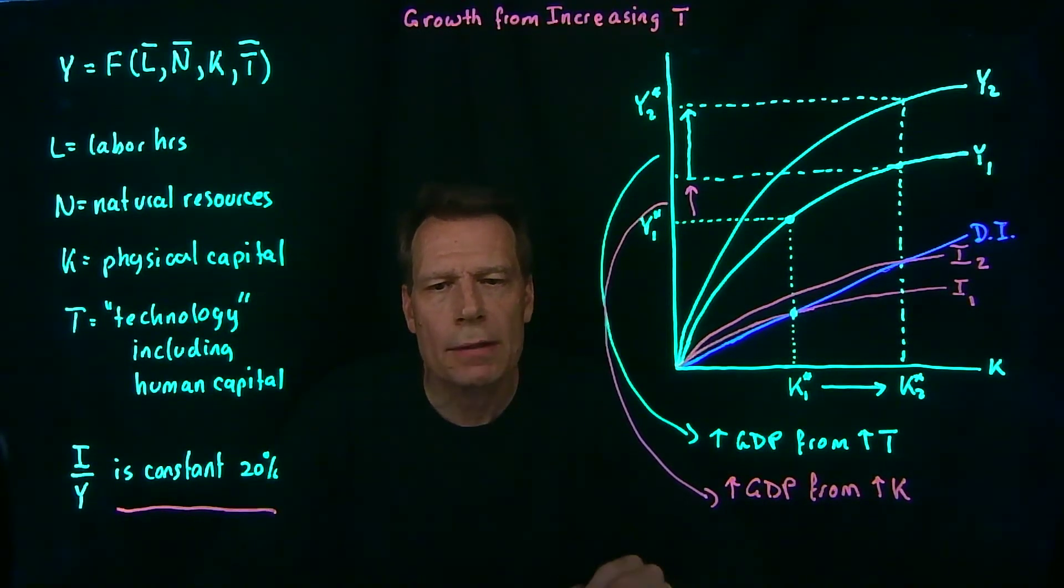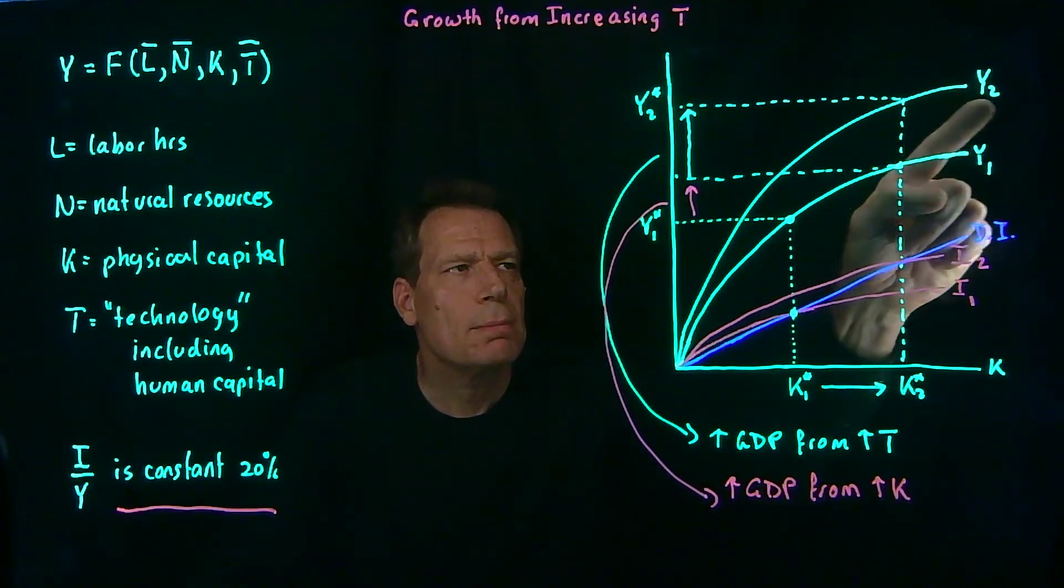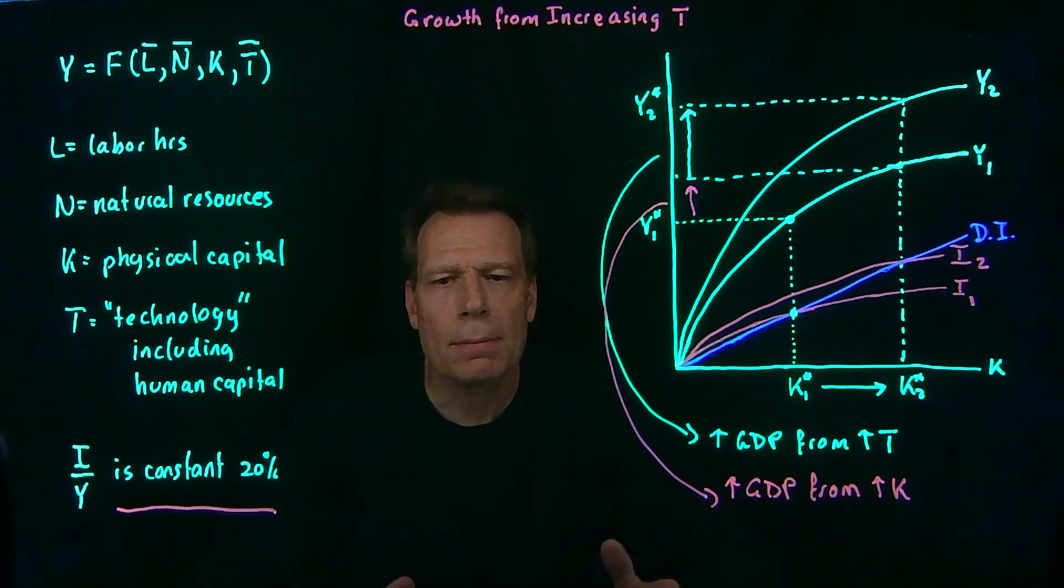But there are two caveats. There's a limit to how much population can grow. So if all we do is rely on population growth to increase GDP to cause economic growth, we're going to hit a limit. In addition, what we really care about is GDP per capita. And if population increases, we have to divide by a larger population to get GDP per capita. But because an increase in the population doesn't just rotate the GDP curve up, but also rotates the investment curve up, we will see an increase in GDP per capita by just seeing increases in population.